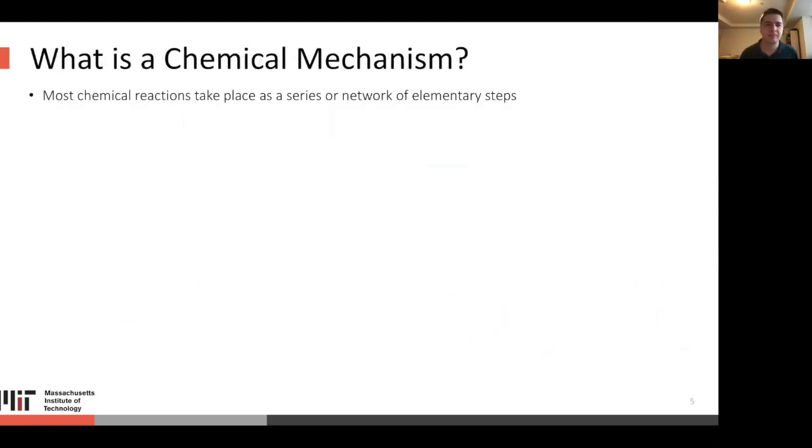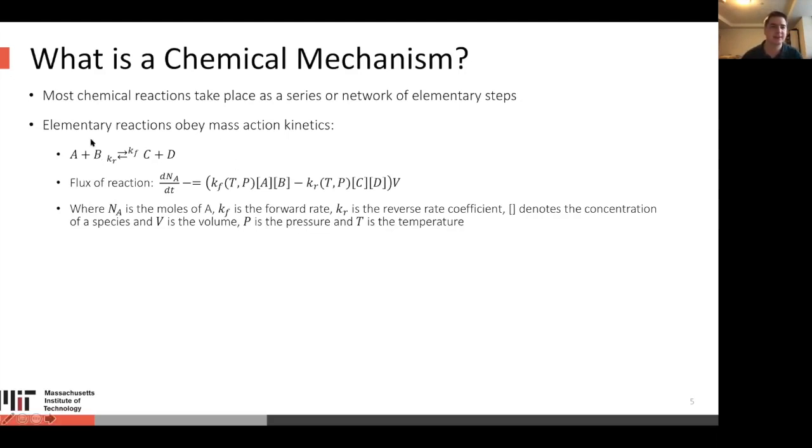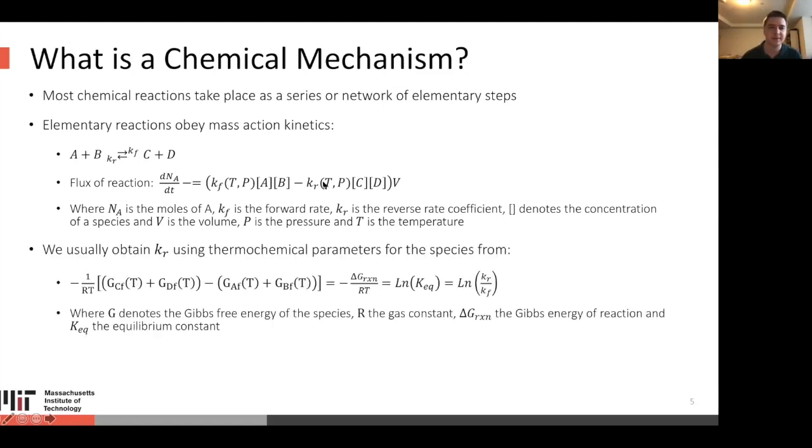What is a chemical mechanism? Most chemical reactions, while you might see them written as one single step, take place as a series or network of elementary steps. These elementary reactions usually obey mass action kinetics. If you have some two reactants, A and B, reacting in the forward direction to form C plus D, you'll also have a reverse reaction. The flux component will have this forward rate coefficient times the concentrations of the reactants, and a reverse rate coefficient times the product concentrations. We usually obtain this reverse rate coefficient using thermochemical parameters for the species, where we have specific thermochemical parameters that let us calculate these Gibbs energies, which essentially allows us to relate Kr to K forward.